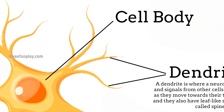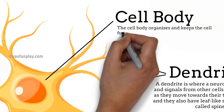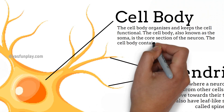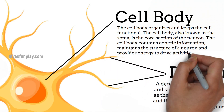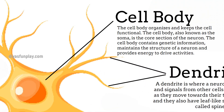Cell body. The cell body organizes and keeps the cell functional. The cell body, also known as the soma, is the core section of the neuron. The cell body contains genetic information, maintains the structure of a neuron, and provides energy to drive activities.